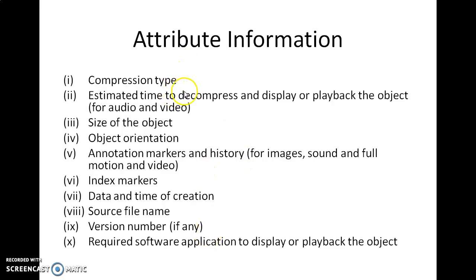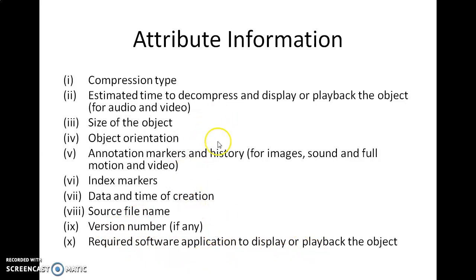The attribute information includes: compression type, estimated time to decompress and display or play the object, size of the object, object orientation, annotation markers, index markers, date and time of creation, source file name, version number, and the required software application to display or play back the object. By providing all these attributes outside the object, the user can decide whether to select and access it.